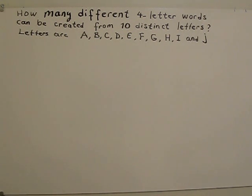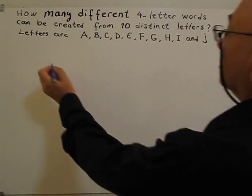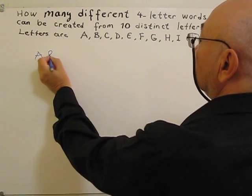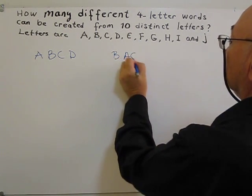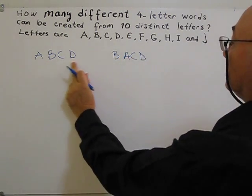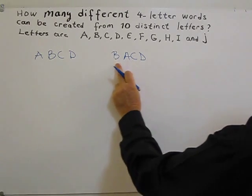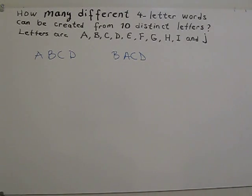First of all, to solve this problem, we need to decide if this question is related to permutation or combination. This problem is related with permutation because order is important. For example, A, B, C, D and B, A, C, D. So word A, B, C, D and word B, A, C, D are not the same. So order is important.